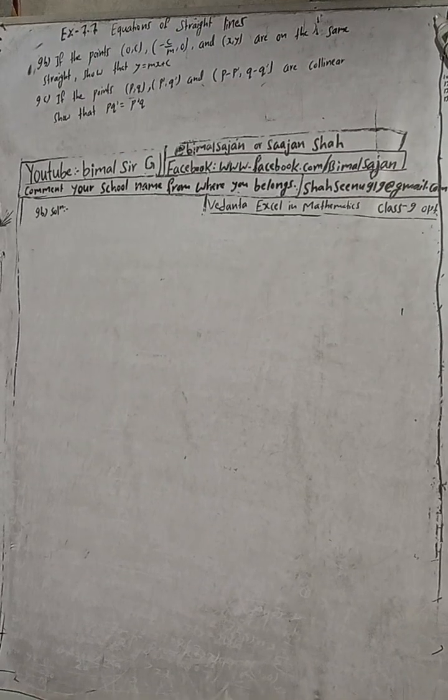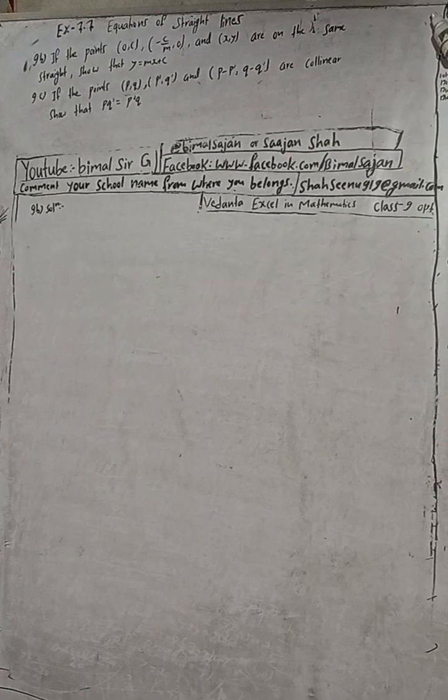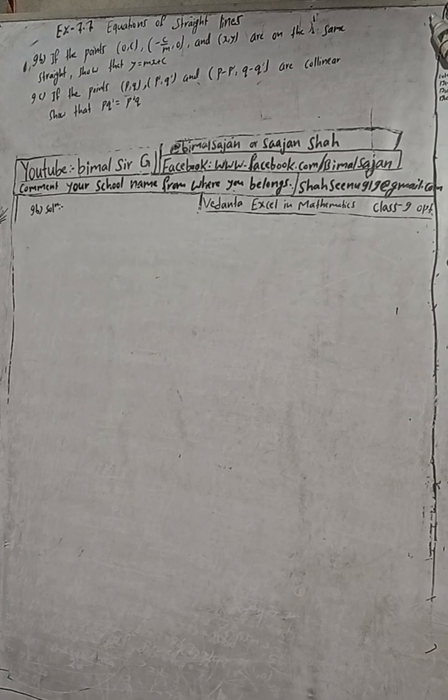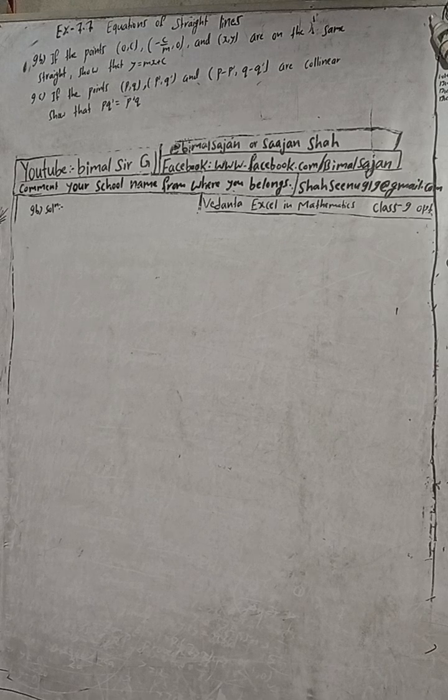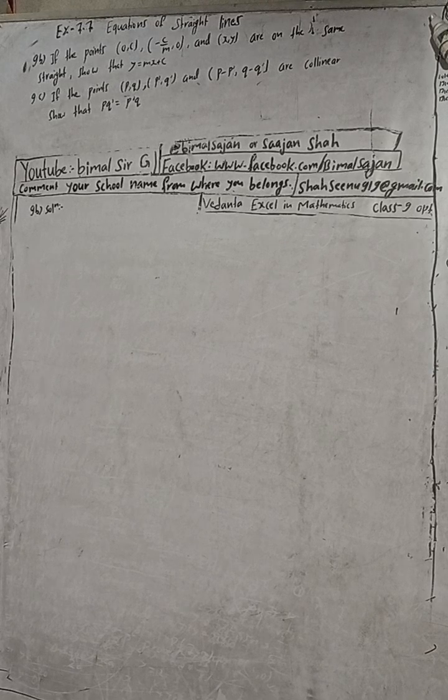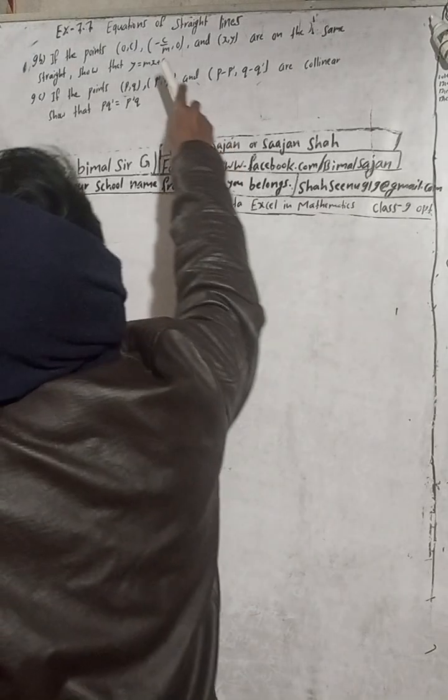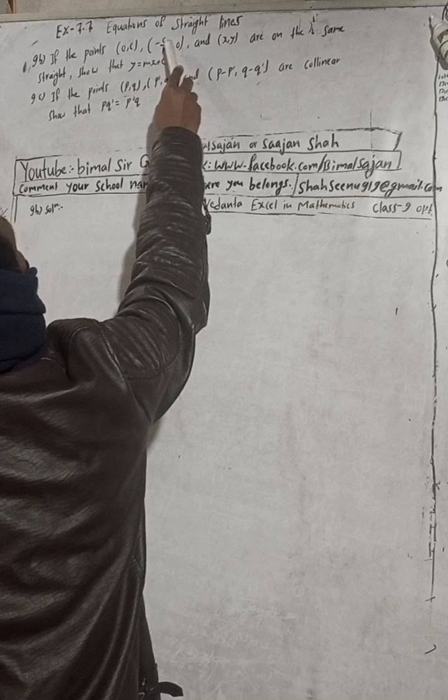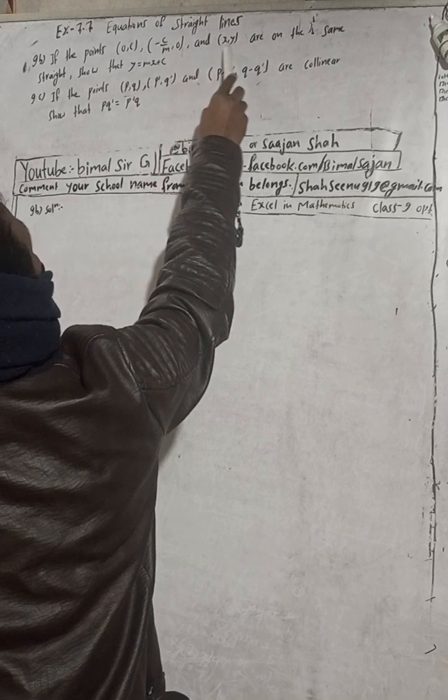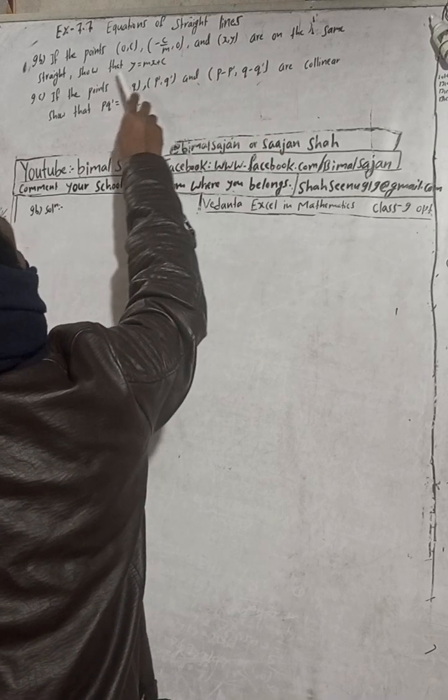Hi Class 9 and 10 students, welcome back to the YouTube channel. This is question number 9B, Exercise 7.7, Equations of a Straight Line, Class 9 Optional Mathematics. Here the question is: if the points (0, C) and (-C/m, 0) and (x, y) are on the same straight line, prove that y equals mx plus C.